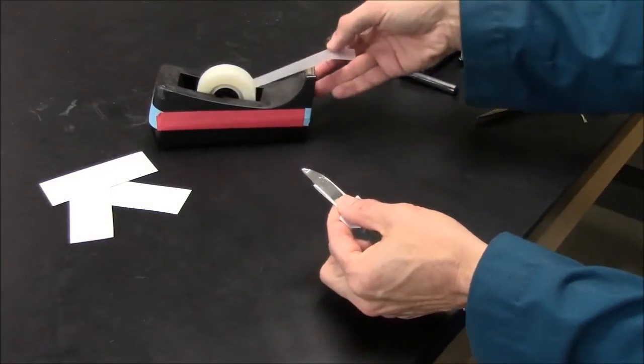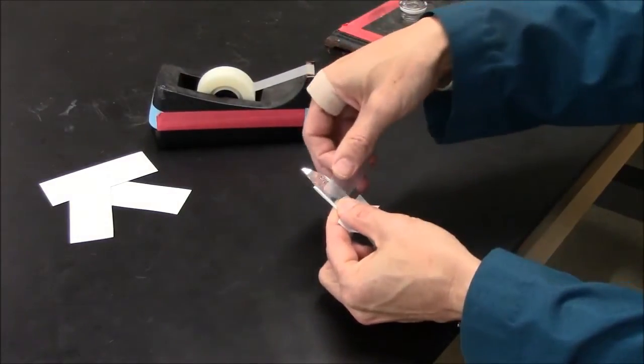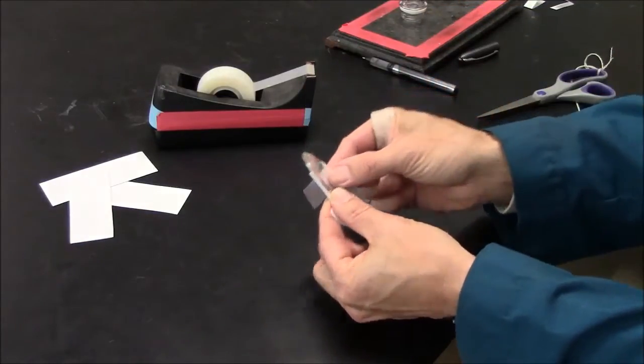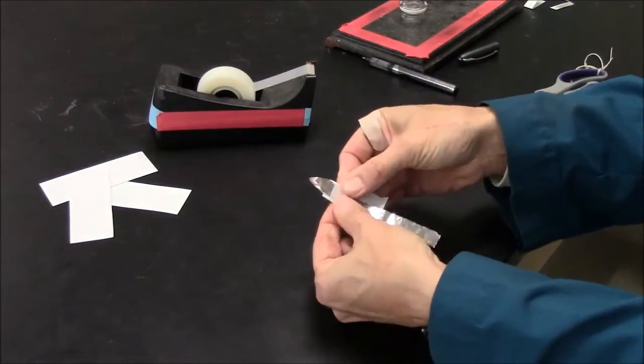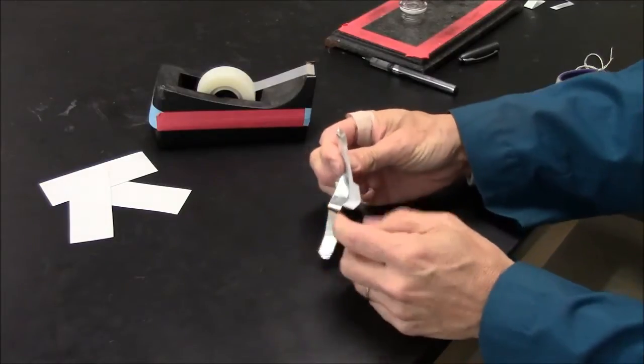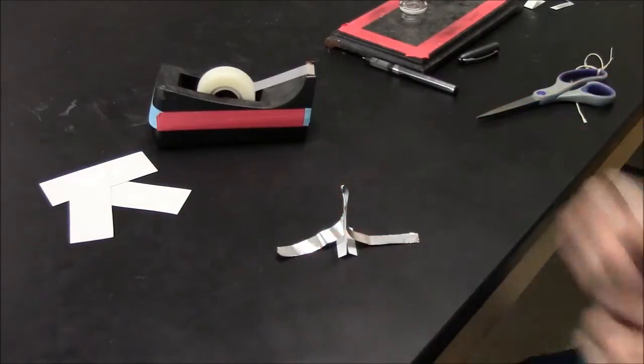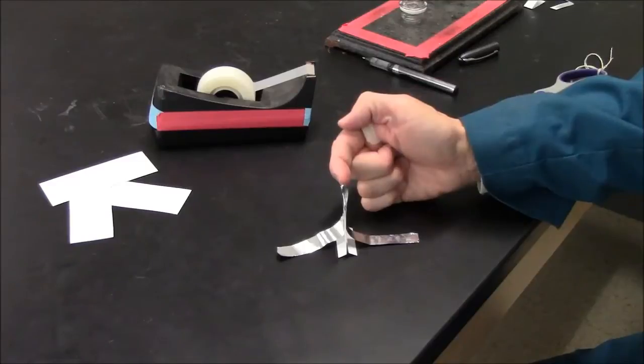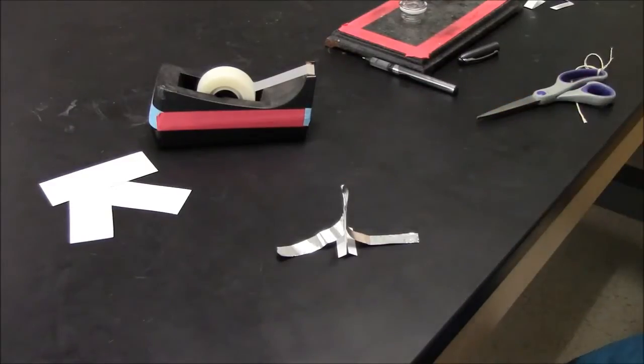I use tape and wrap the tape around the paper and the foil. So now it's secure, stands on its own, air gap on the top, very thin foil at the point.